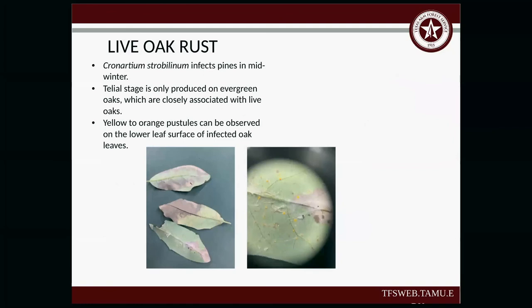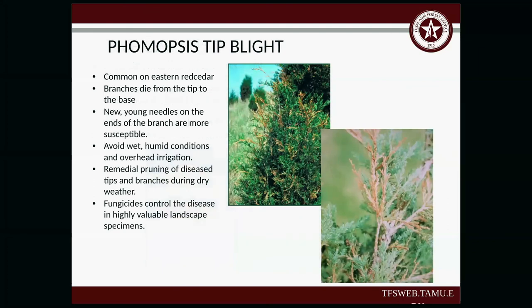For live oaks, there's a rust that infects pines in midwinter. Live oaks are semi-evergreen — they keep their leaves year-round and then drop them when they replace with new ones. The telial stage is produced on the evergreen oaks. You'll see a yellow to orange pustule on the oak — little yellow dots that look almost like fuzzy moss on the back. For form blight on eastern red cedar, branches die from the tip to the base. New young needles at the end of the branch are more susceptible. Avoid wet humid conditions and overhead irrigation. Remedial pruning of diseased tips during dry weather is recommended, and fungicide can be used to control the disease on highly valued landscape specimens.